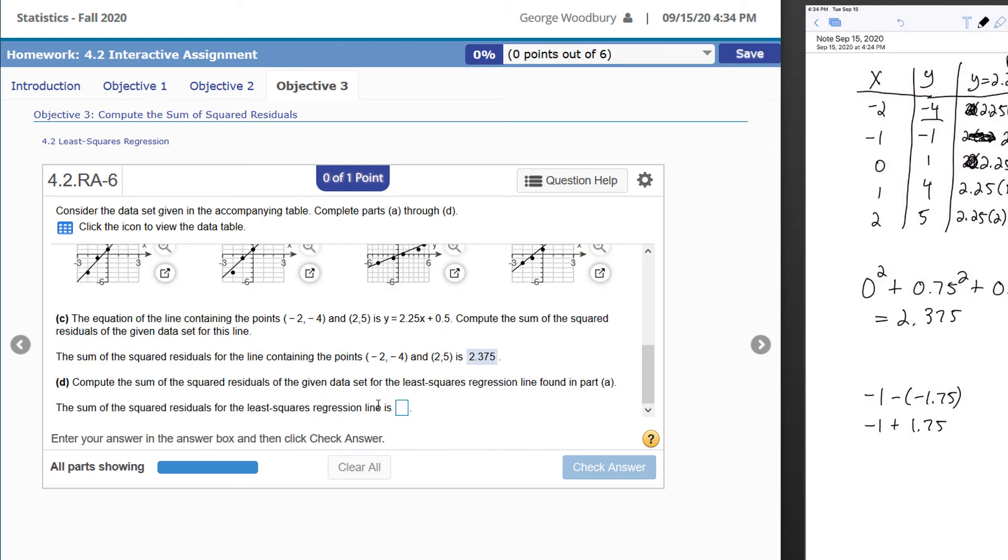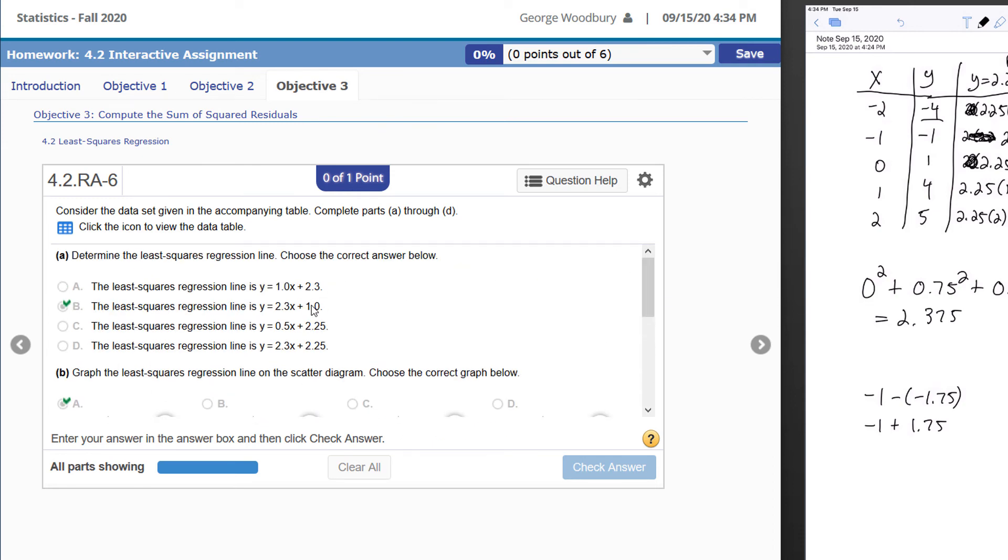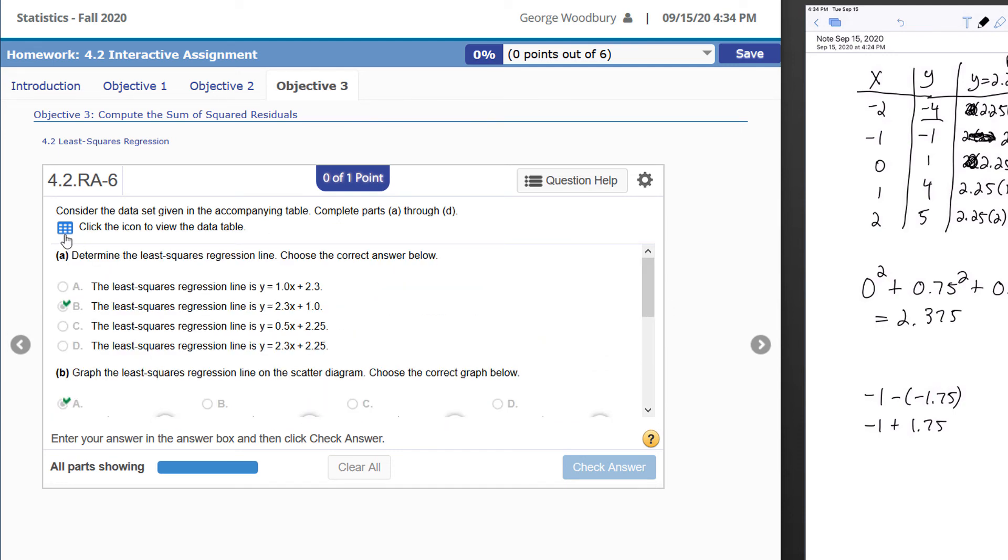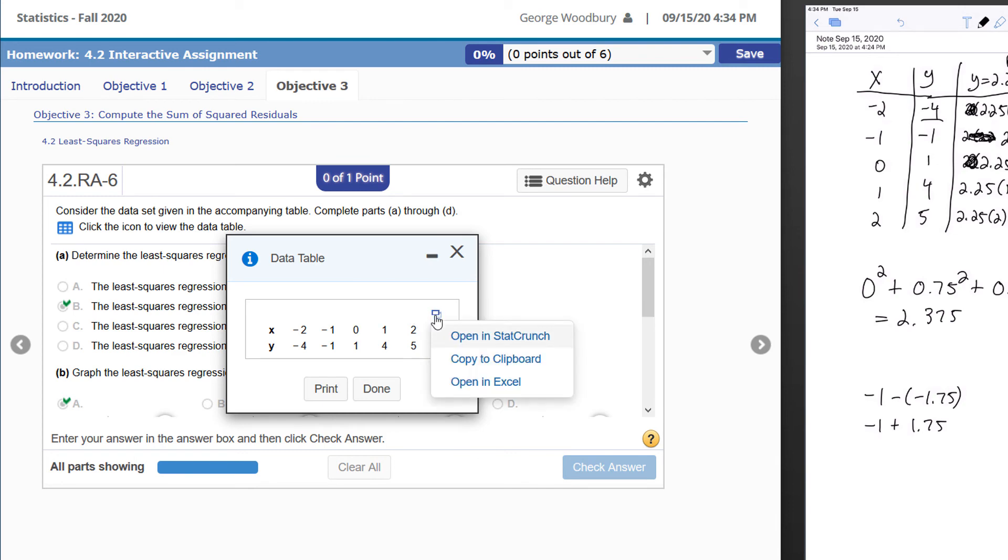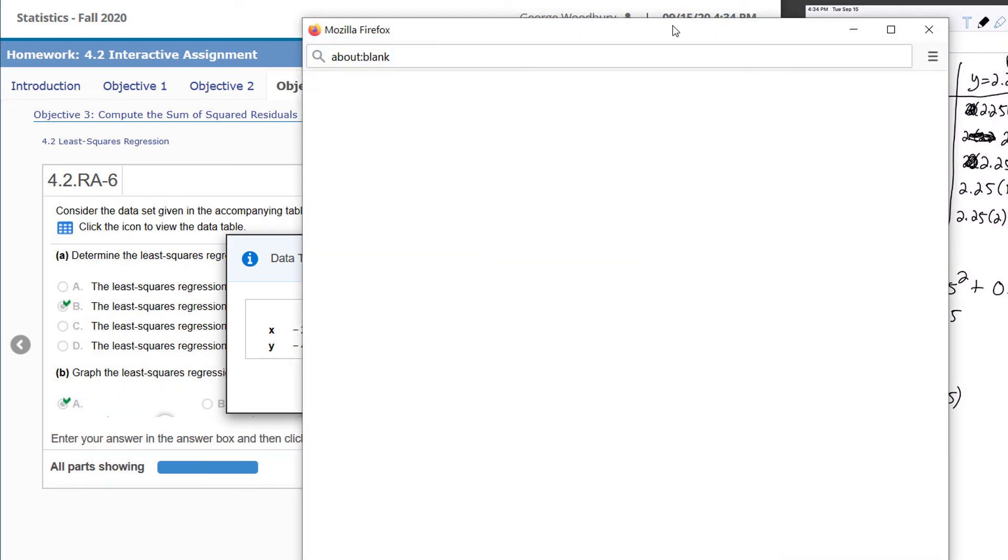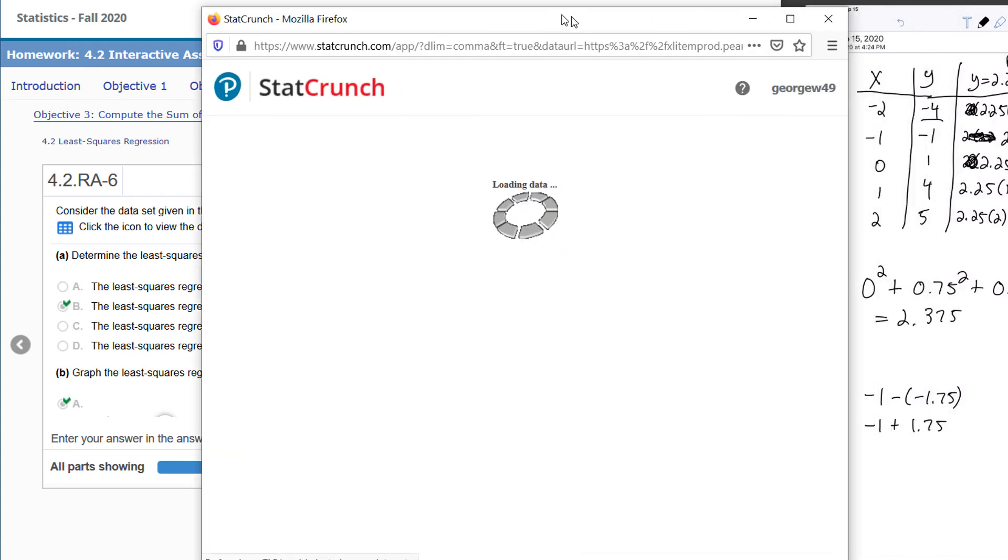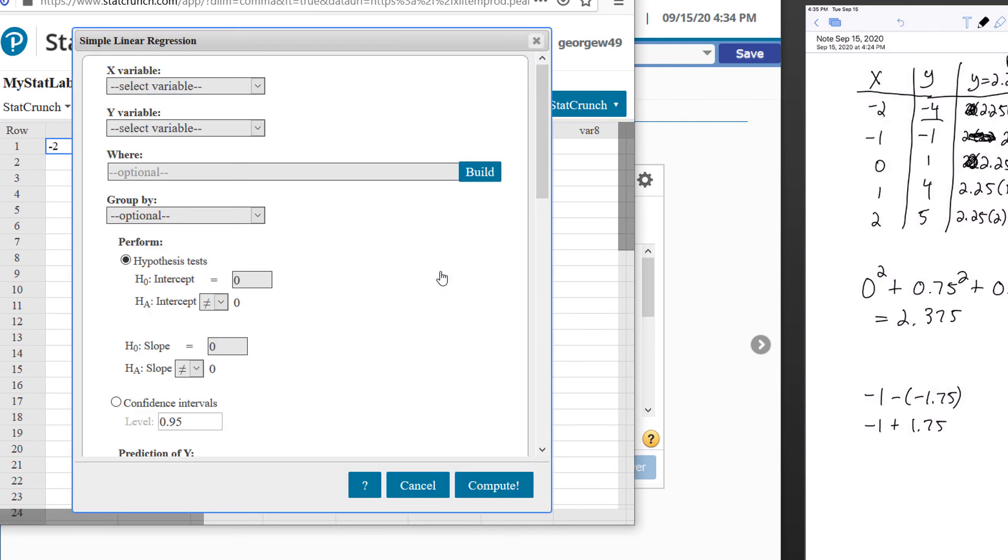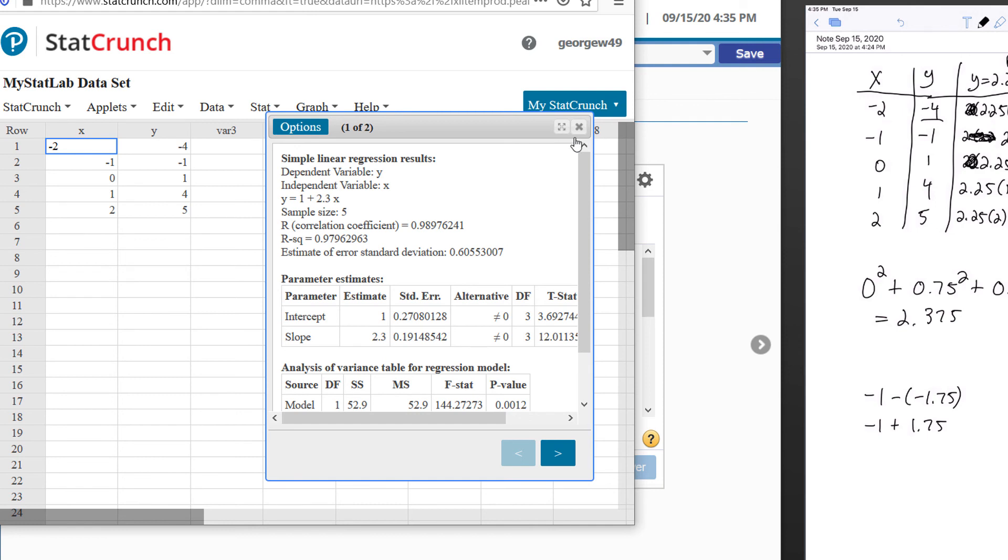Now, the sum of squared residuals for the least squares regression line—I could do the same exact thing using this equation from part A, 2.3x plus 1—however, StatCrunch will do this one for me. Let me show you how that works. I'm going to open up the table and copy it into StatCrunch again. I'm going to do exactly what I did the last time: Stat, Regression, Simple Linear. The x variable is the column x, the y variable is the column y, and I press Compute.